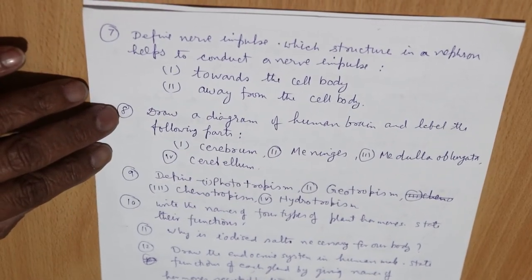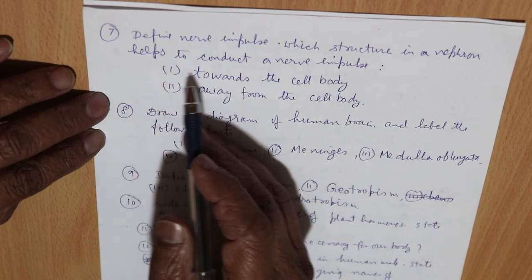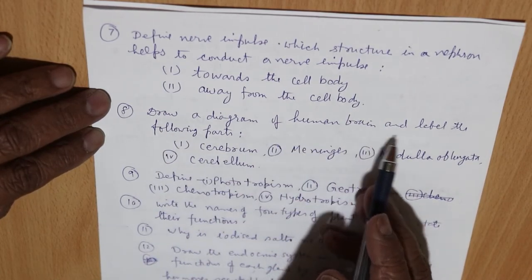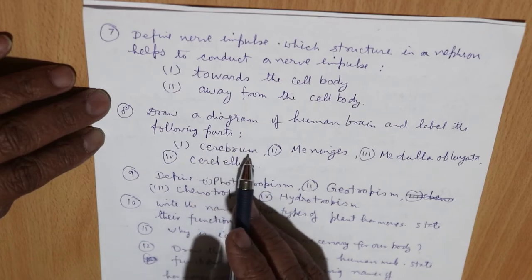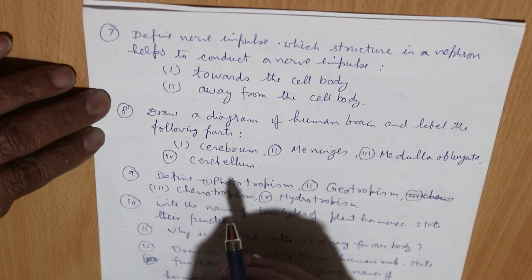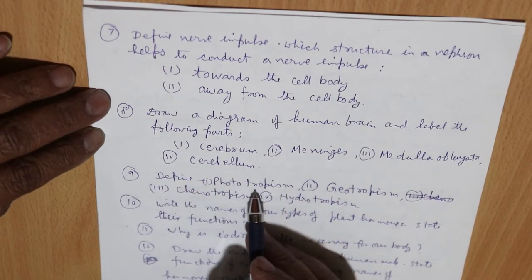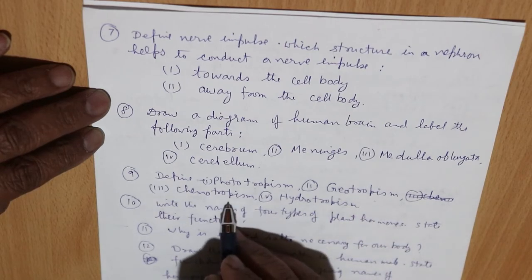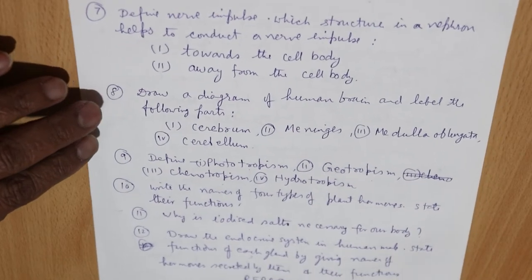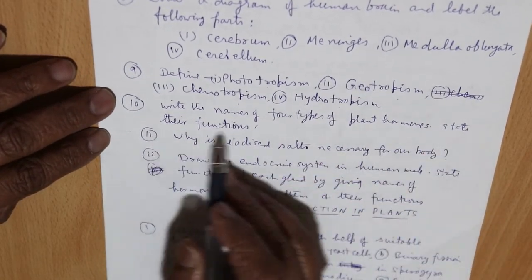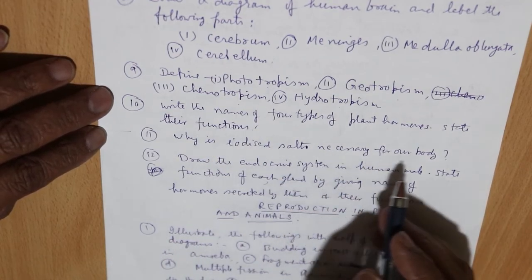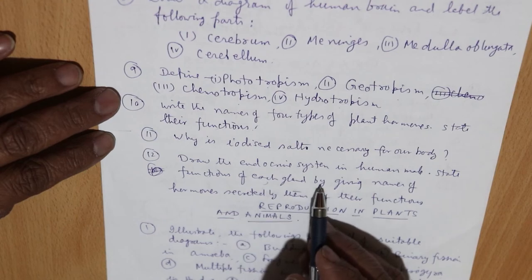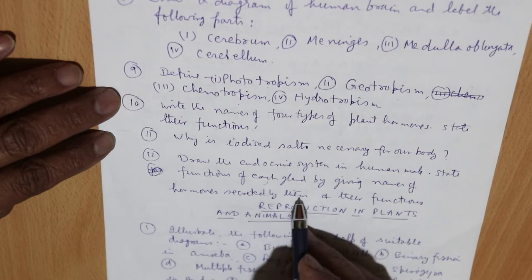Define the nerve impulse. Which structure in a neuron helps to conduct a nerve impulse towards the cell body, and which conducts away from the cell body? Draw a diagram of the human brain and label the cerebrum, meninges, medulla oblongata, and cerebellum. Define phototropism, geotropism, chemotropism, and hydrotropism. Write the names of four types of plant hormones and state their functions. Why is iodized salt necessary for our body? Draw the endocrine system in a human male, name the hormones secreted by each gland, and state their functions.